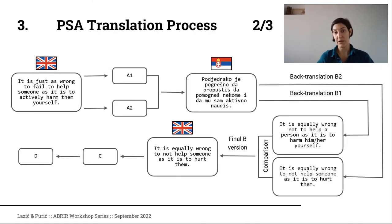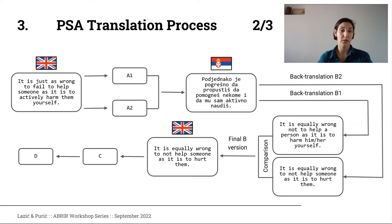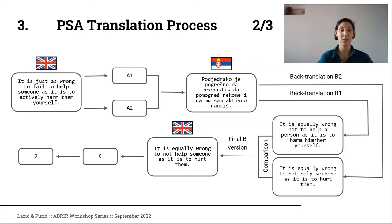After we have final version A, we then back-translate it to English twice using two different people — person B1 and B2 — who make translations B1 and B2, which practically never are identical. Based on the differences, a comparison is made and a final version B is created. In this comparison, both B translators and the language coordinator take part and discuss any differences. We then took translation B2 as the final B translation because it sounded a bit more natural.